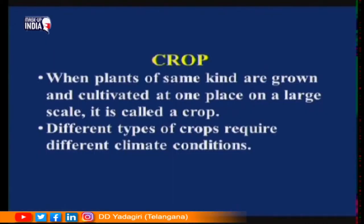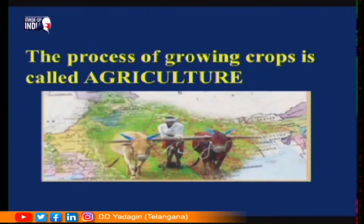Different types of crops require different climatic conditions. The process of growing crops is called agriculture. Agriculture involves many things — starting with levelling of land, ploughing of land, providing water, providing fertilizers, and manures. Many different activities are carried out in agriculture.